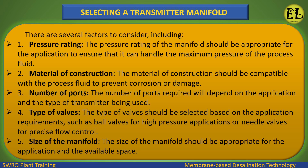Selecting a transmitter manifold — there are several factors to consider: 1. Pressure rating: the pressure rating of the manifold should be appropriate for the application to handle the maximum pressure of the process fluid. 2. Material of construction: should be compatible with the process fluid to prevent corrosion or damage. 3. Number of ports: depends on the application and type of transmitter being used. 4. Type of valves: selected based on application requirements, such as ball valves for high-pressure applications or needle valves for precise flow control. 5. Size of the manifold: should be appropriate for the application and the available space.